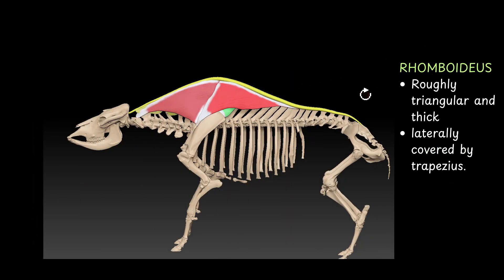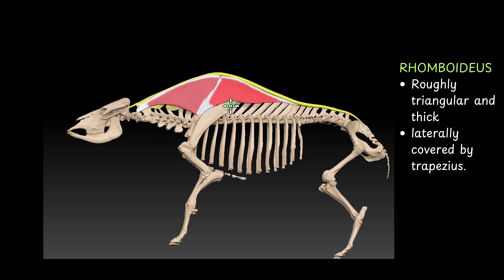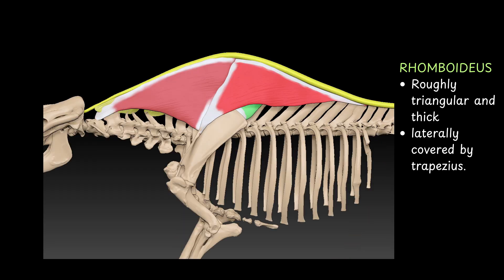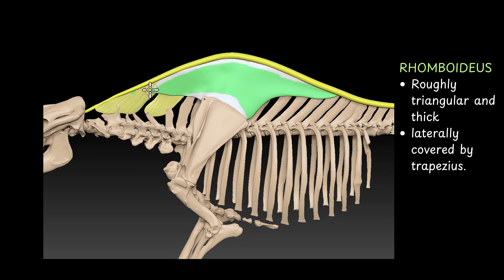The next muscle we will discuss is the rhomboideus muscle. It is roughly triangular and thick. It is literally covered by trapezius muscle. So this is the trapezius muscle, and below the trapezius muscle you will find the rhomboideus muscle. We have to first remove the trapezius muscle to find the rhomboideus muscle below it. So now you see, we remove the trapezius muscle, and below the trapezius muscle you can find the rhomboideus muscle.